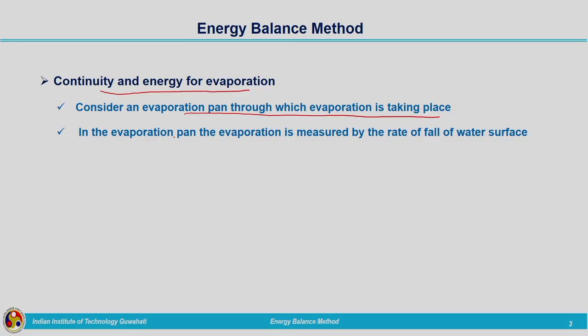What is an evaporation pan and how the rate of evaporation is calculated — that we have seen in the previous lecture under the topic of experimental approach. The evaporation pan is filled with some amount of water, and the reduction in water level taking place in the pan is measured. That representative value, multiplied by the pan coefficient, gives you the rate of evaporation from the nearby lake or reservoir. Evaporation is measured by the rate of fall of the water surface.